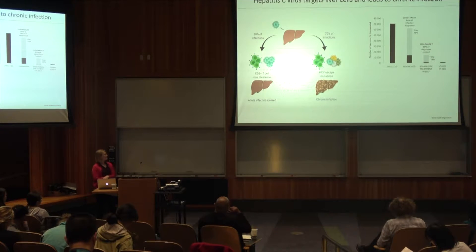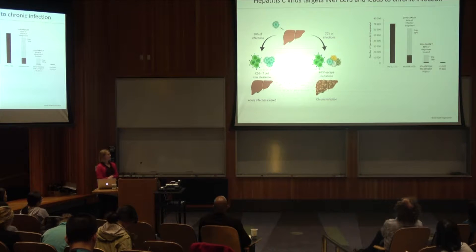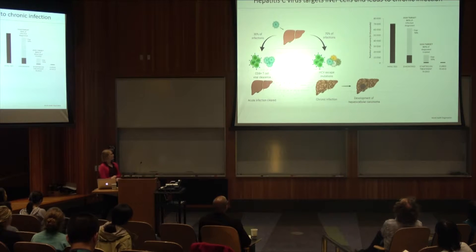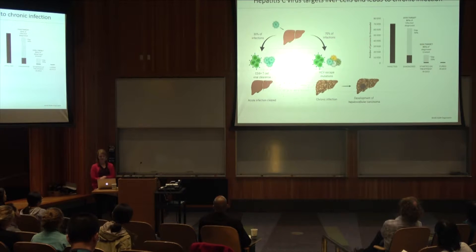There's currently no vaccine for HCV, but we do know that about 30% of people who are infected are actually able to clear the virus on their own without any help due to a CD8 T cell response, helped by CD4s and other immune cells, and then you get an acute infection cleared. However, in about 75% of people who are infected, HCV is able to escape the CD8 T cells, and you get a chronic infection. Many people don't know that they're chronically infected for decades, and then in a subset of them, it leads to the development of hepatocellular carcinoma. So we want to understand more about CD8 T cells and their response to HCV, and maybe understand why some people are able to clear it while others have these escape mutations.